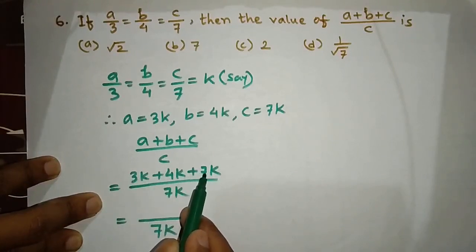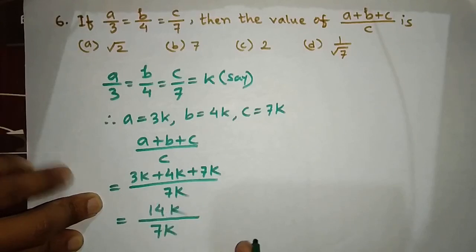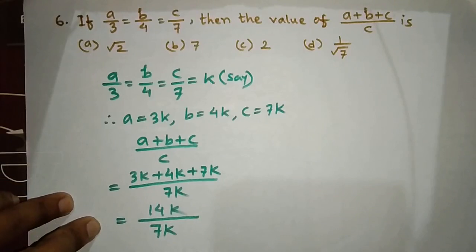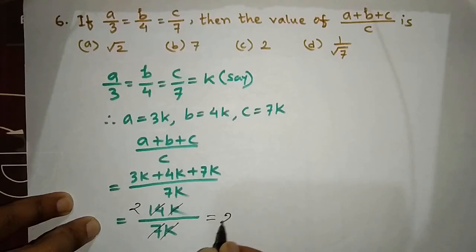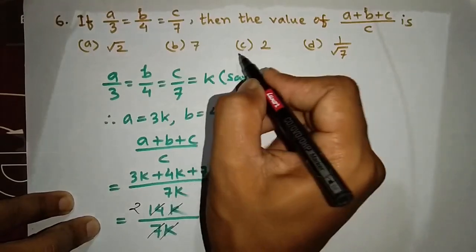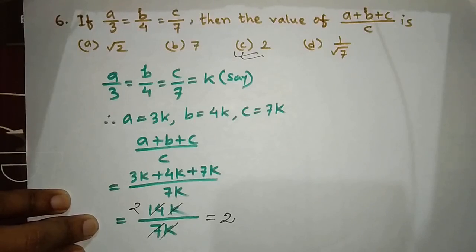The answer is: A is 3, B is 4, C is 7, so A plus B plus C over C gives the number of options. You can get the number of options from this. Thank you.